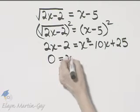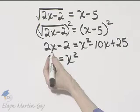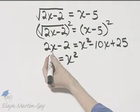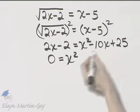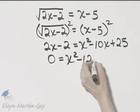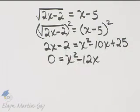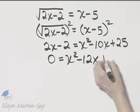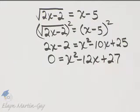I'll have x squared. Now if I subtract 2x from both sides, that term is gone and negative 10x minus 2x, that's minus 12x. Then I'll add 2 to both sides, so that's 25 plus 2, which is 27.